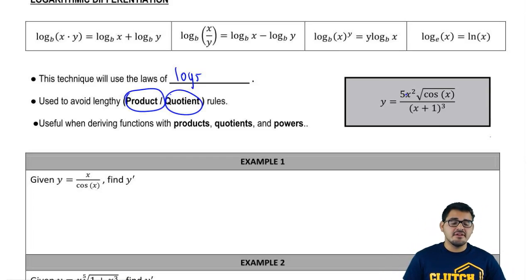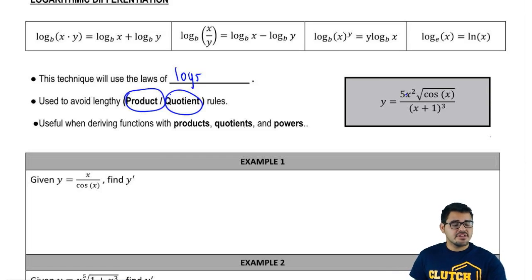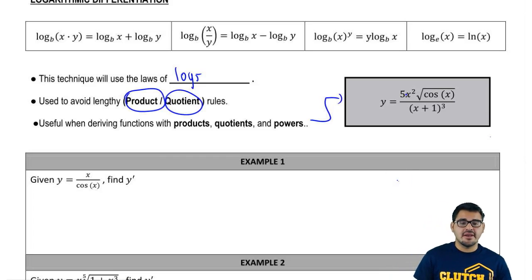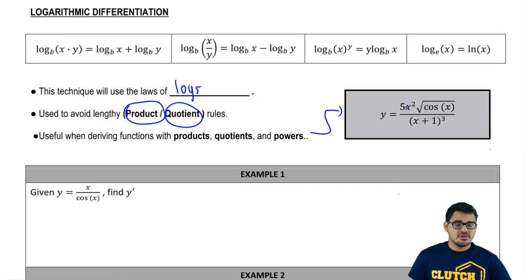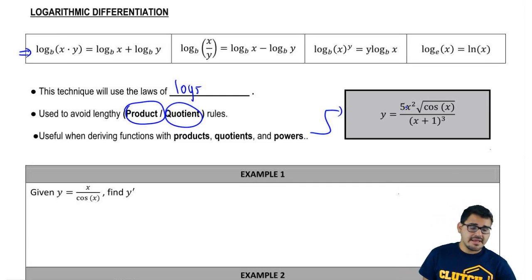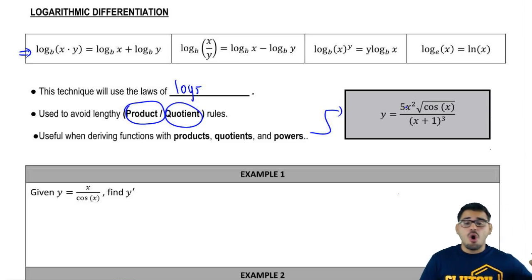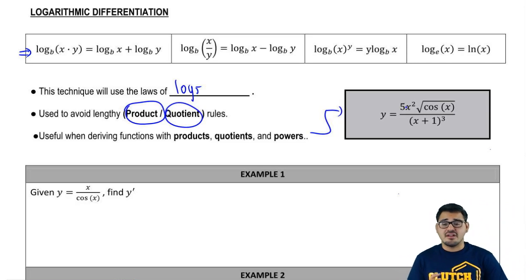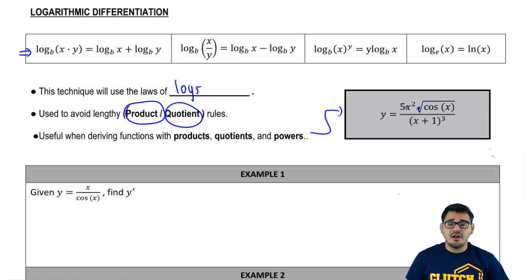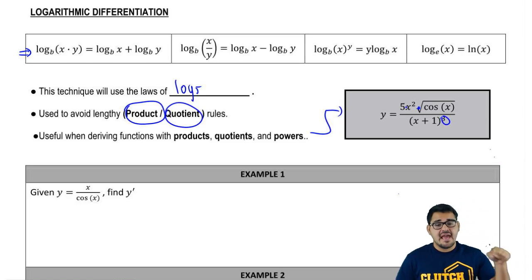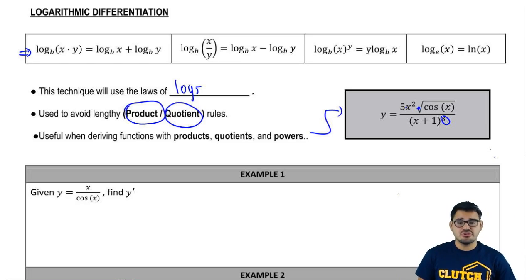It is useful when deriving functions with products, quotients, and powers. And for an example of what that may look like, let's look right over here to the right, which is a perfect example of when the function tells us: please, use logarithmic differentiation. Don't make your life so hard. Use the rules of logs, which I actually provided for you right up here. We have y equal to 5x squared times the radical of cosine, all divided by x plus 1 to the third.